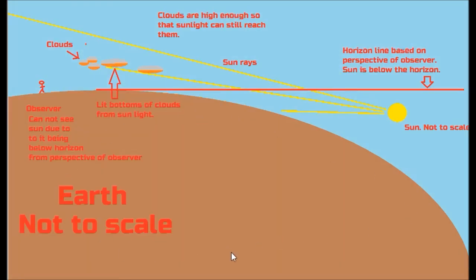Here is a representation of a globe earth, not to scale. Here is the sun. The observer cannot see the sun due to it being below the horizon. This represents the horizon line. These represent the sun's rays. Here are the clouds. And here are the lit bottoms of the clouds from the sunlight. Clouds are high enough, so sunlight can still reach them. This easily explains lit bottoms of clouds after sunset.